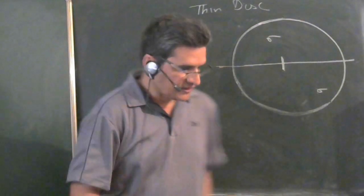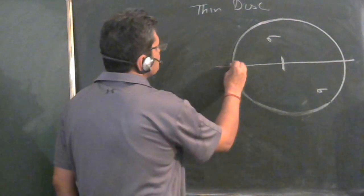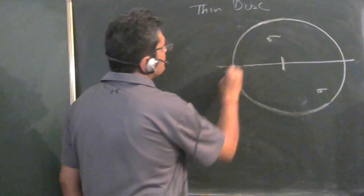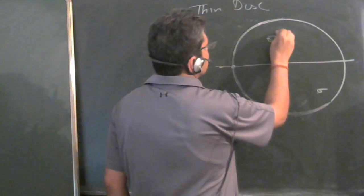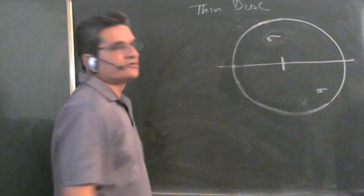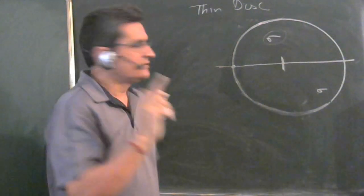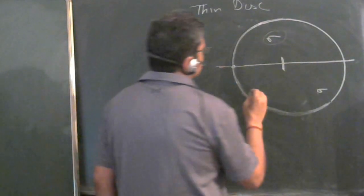In this lecture we will derive an expression for potential at any point on the edge of a thin disk with charge density sigma uniformly distributed on one of the sides. It is one of the sides that is important.